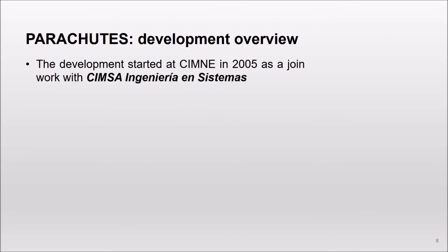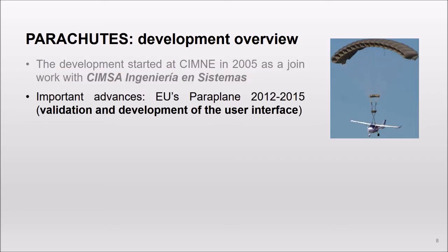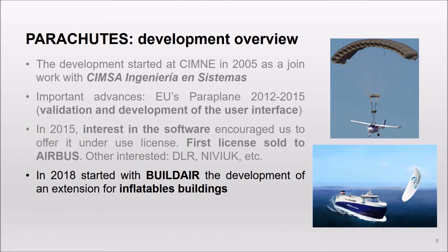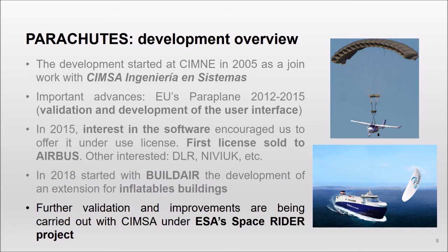Here's an overview of our proposal. The development of ParaJuice started at CIMNE in 2005. This was a joint work with CIMSA Ingeniería de Sistemas, a Spanish manufacturer of parachutes. Together we made important advances during the European project Paraplane, basically in validation and the user interface. In 2015, Entertainment Software encouraged us to offer it under license. We sold the first one to Airbus for use in the A400M project. In 2018, we started with the company BuildAir an extension of ParaJuice for inflatable buildings. Today we continue validating and developing new applications. Recently, we carried out important advances in the context of the Space Rider project.